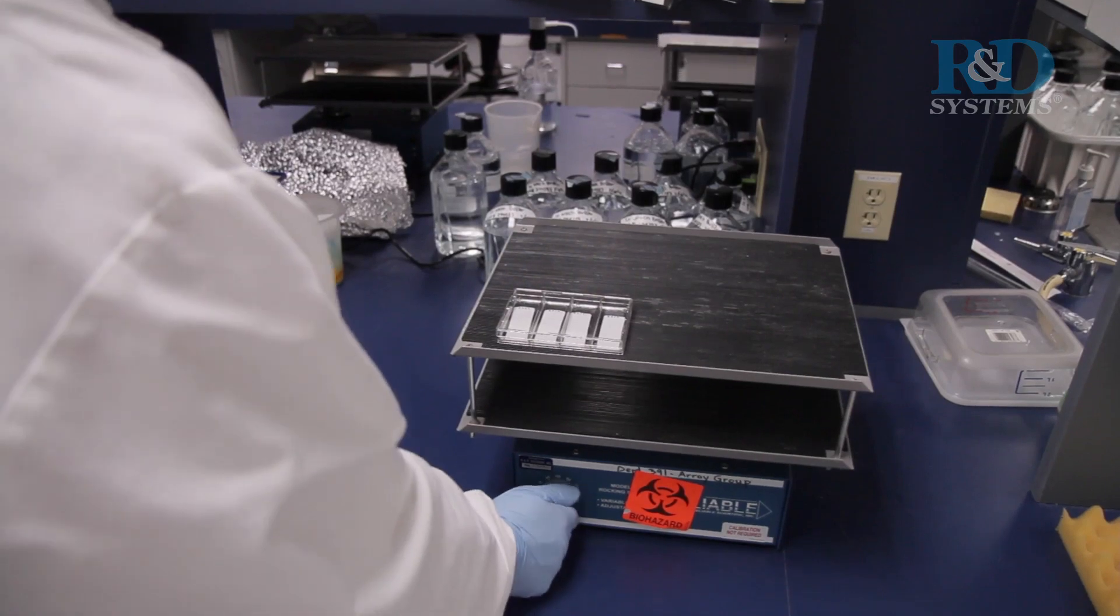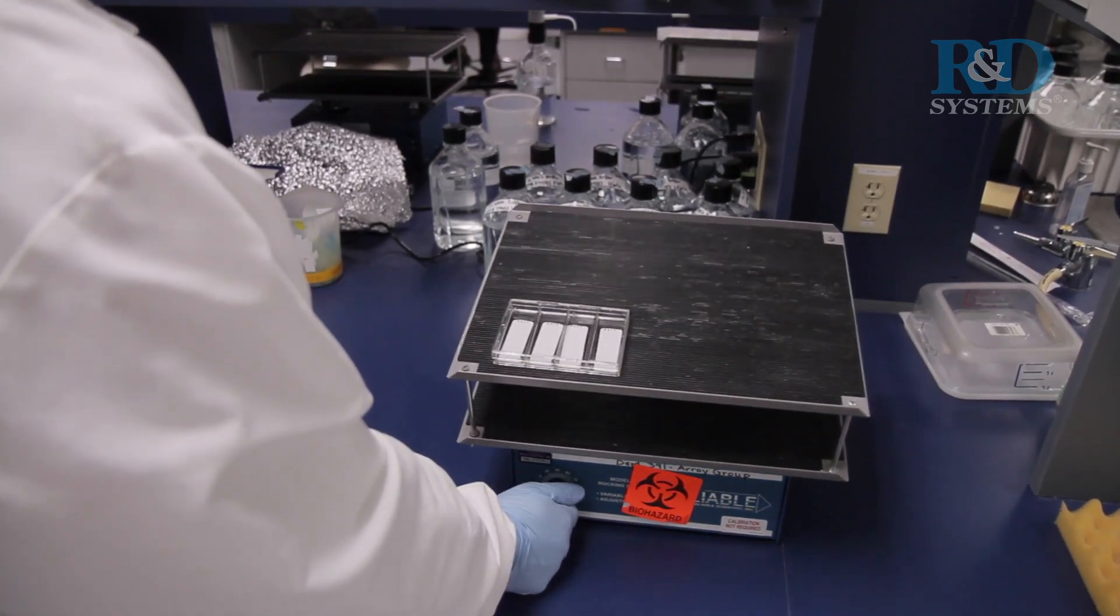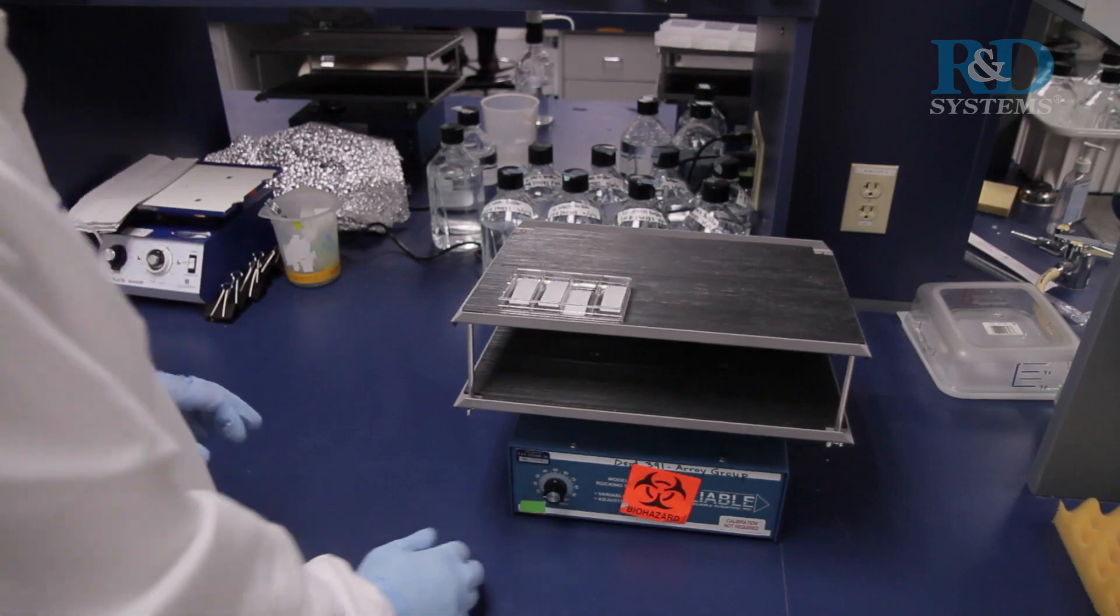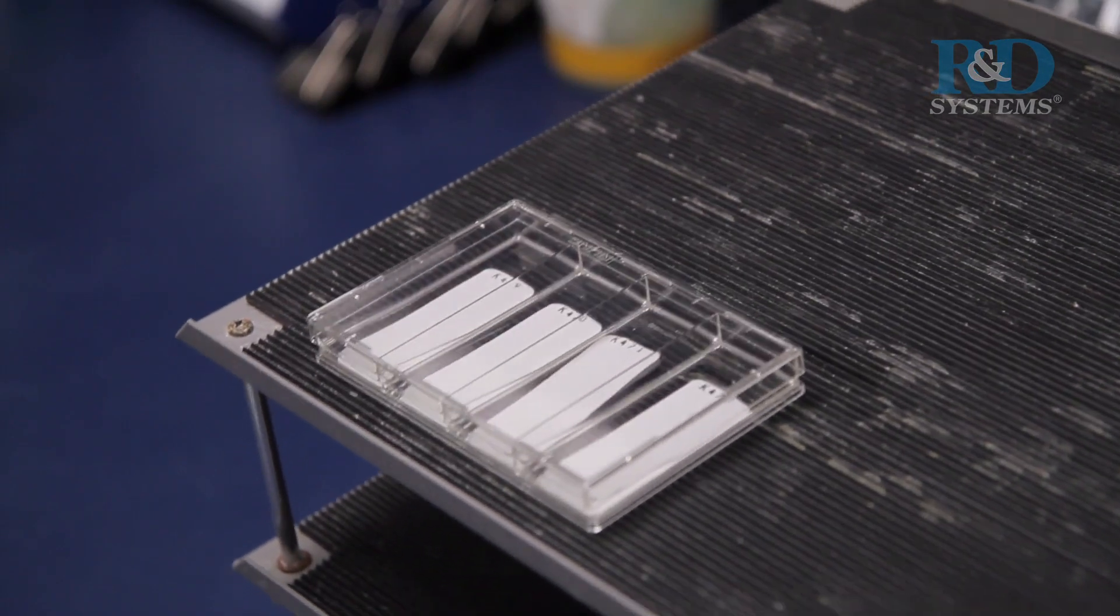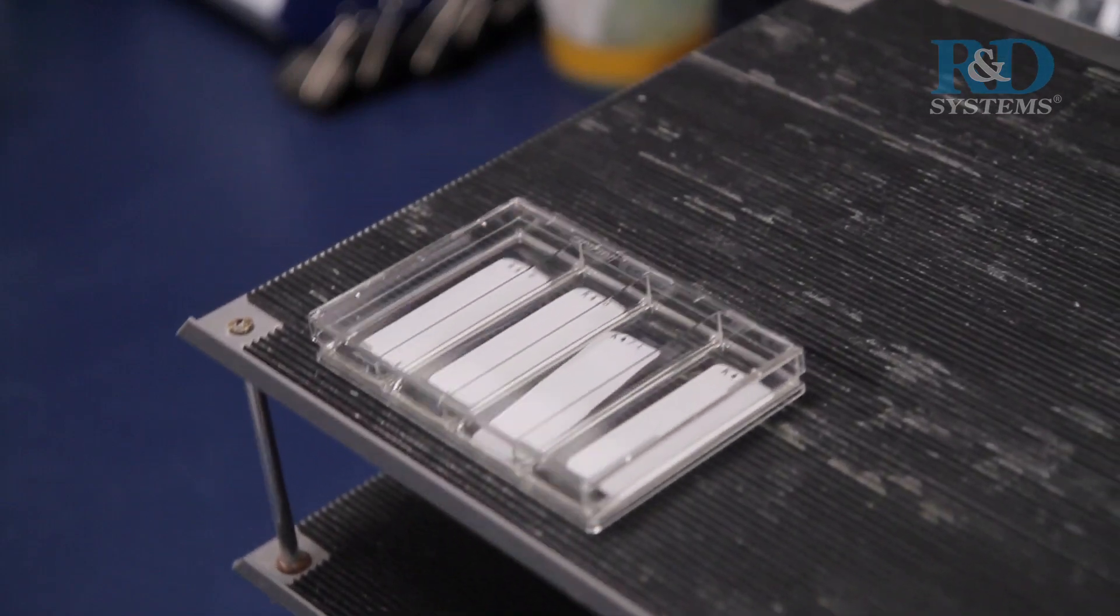Cover the wells with the lid and incubate for 2 hours at room temperature on a rocking platform. The surface of the array should be completely covered by diluted antiphosphotyrosine HRP.